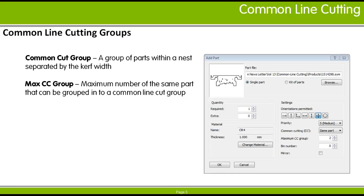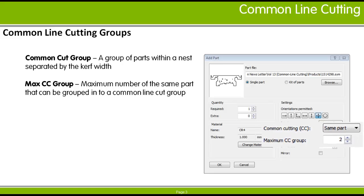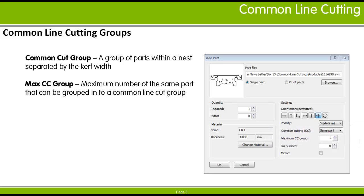When using the same part method, you may limit the number of instances of that part that may occur in any one Common Cut Group. Use the Maximum CC Group control when you add the part to the parts list. For example, if you set the maximum to two parts, the nester will nest the part in pairs with a single Common Cut between the members of each pair. If you set the maximum to a number greater than two, the nester will create compact groups in which the parts are arranged in a rectangular pattern.